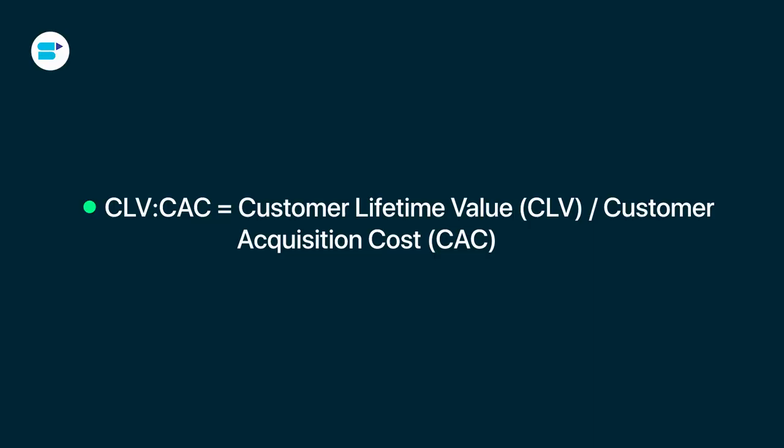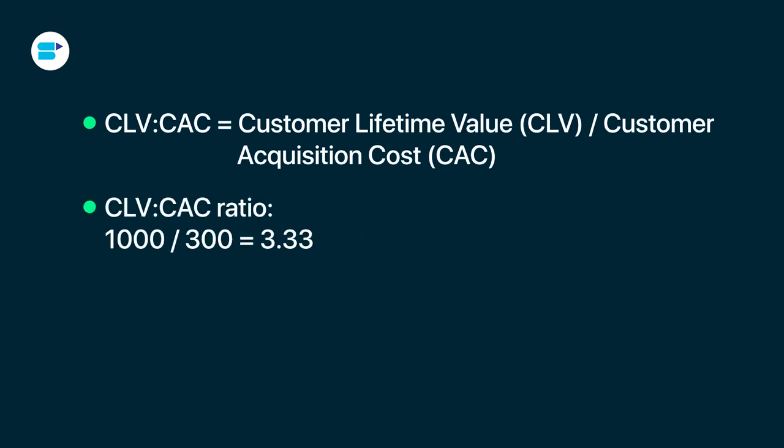For example, let's say the average CLV for a business is $1,000 — that means each customer brings in $1,000 in profit during their whole time with the company. If it costs $300 to get a new customer, the CLV to CAC ratio is $1,000 divided by $300, which equals 3.33. This means that on average, the business makes about 3.33 times more money over a customer's lifetime than it costs to acquire that customer.